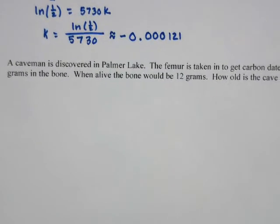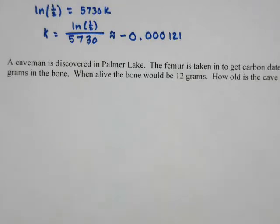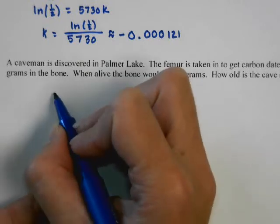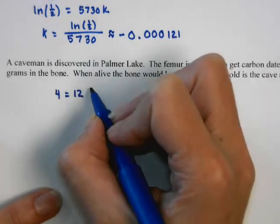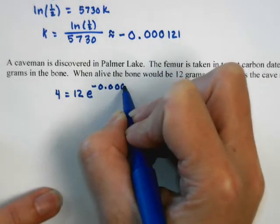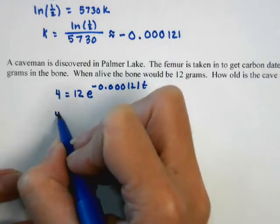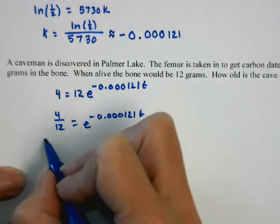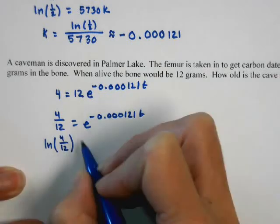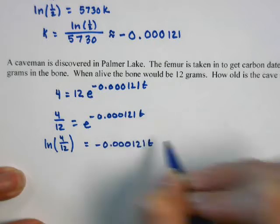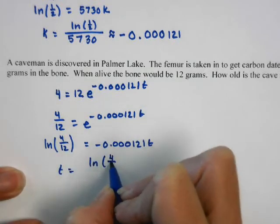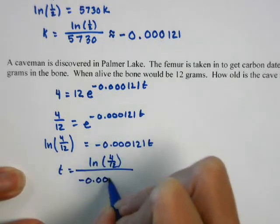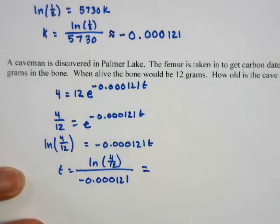For part b, a caveman is found in Palmer Lake. The femur is carbon dated — it has 4 grams remaining, but when alive the bone would have had 12 grams. We have a final amount of 4, initial of 12, k = −0.000121, and we're solving for t. Divide, take the natural log, then divide by k. The natural log of (4/12) divided by negative 0.000121 gives approximately 9,079 years.